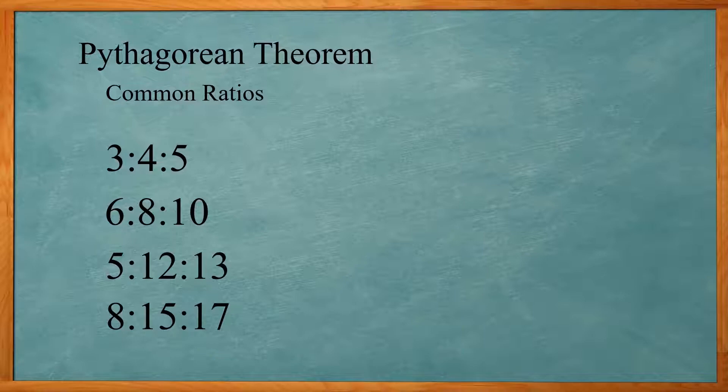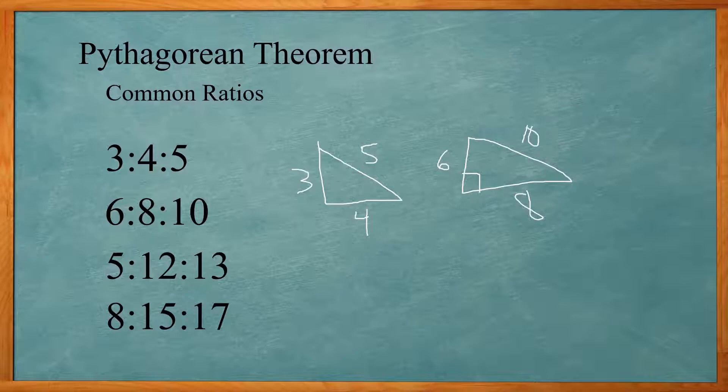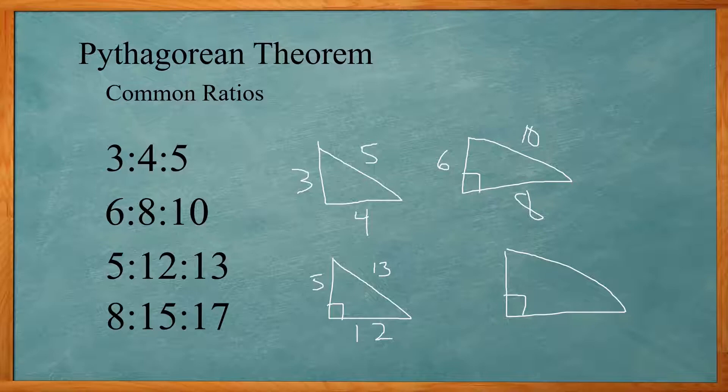If you have 3 and 4 on one triangle, it's automatic that you have 5 as the hypotenuse. If you see 6 and 8, you know the third side is going to be 10. If you see 13 as hypotenuse and 5 as one leg, you know the other one has to be 12. If you see 17 and 15, the other leg has to be 8.